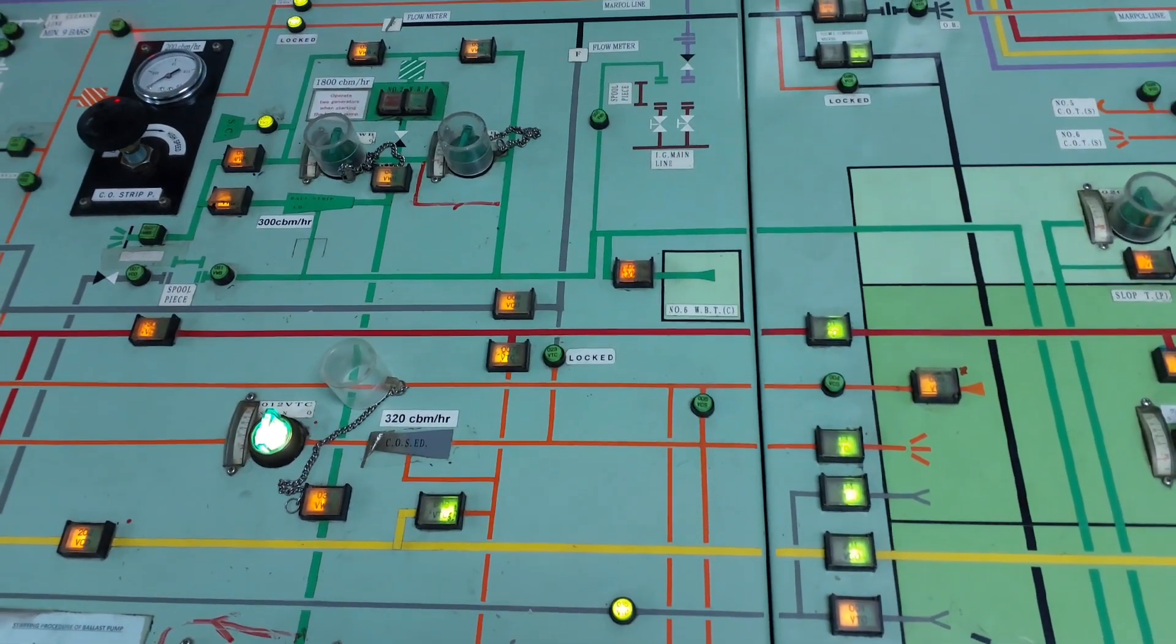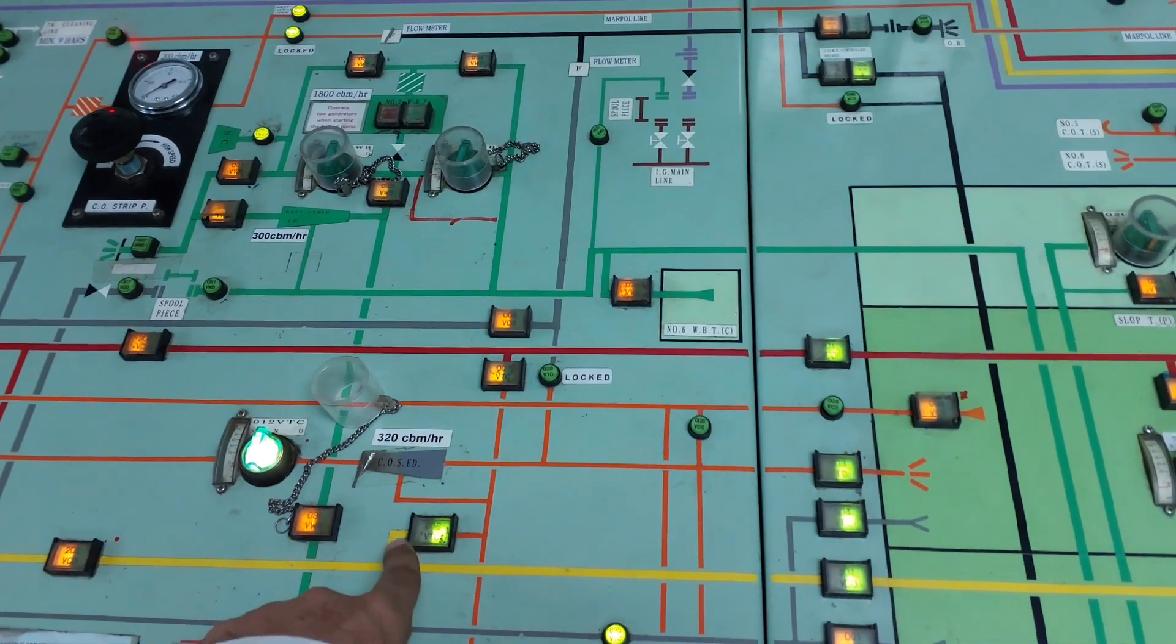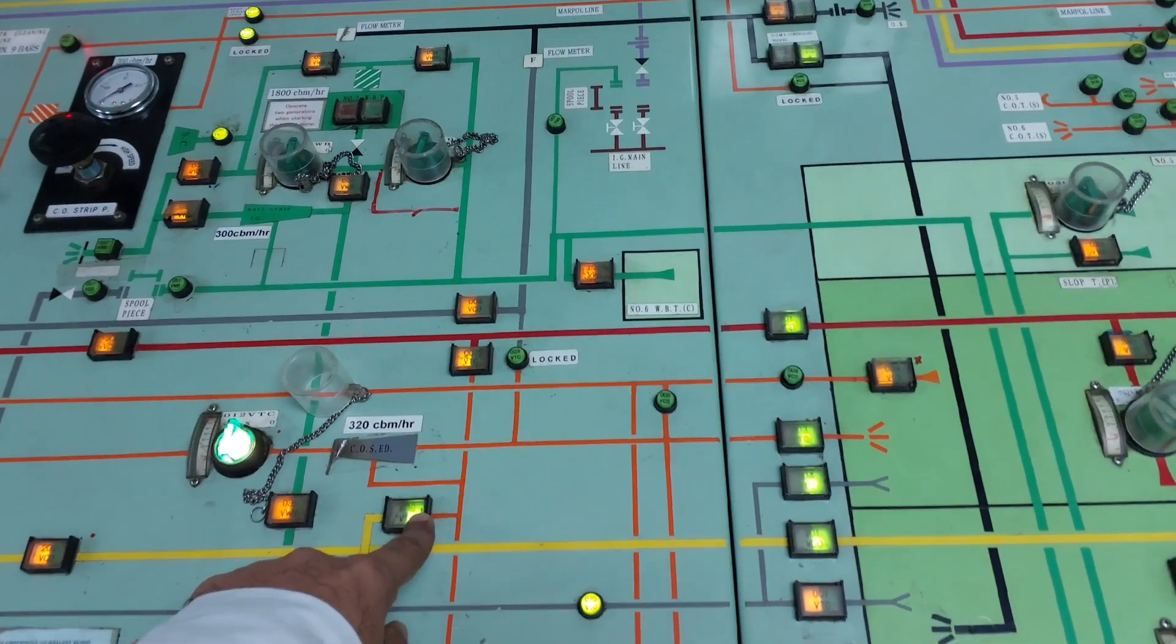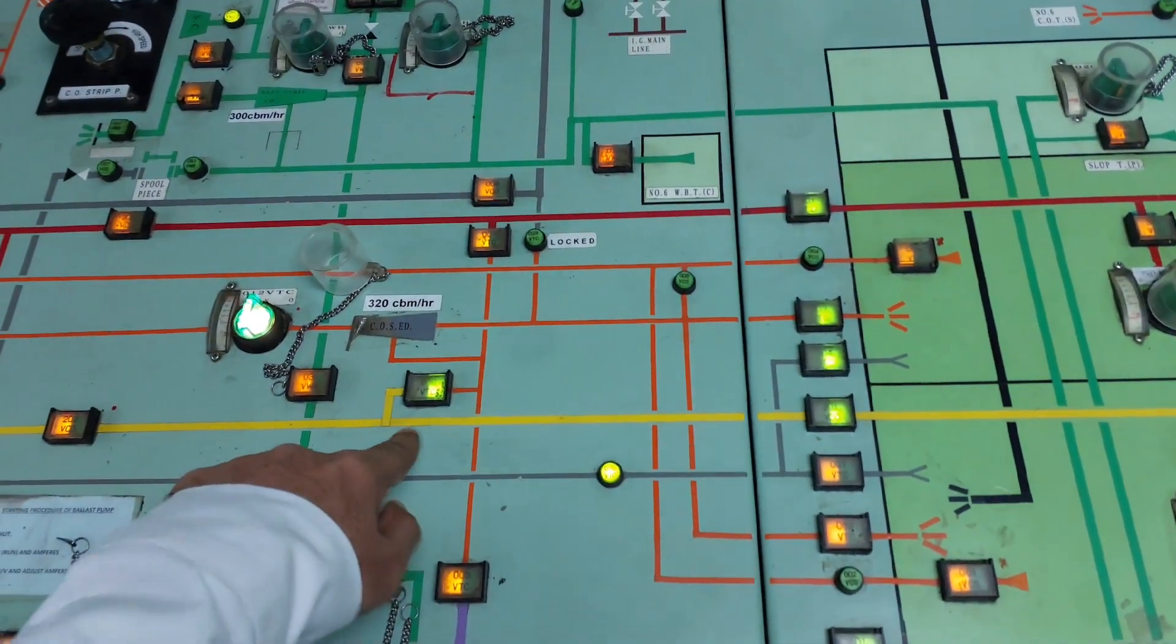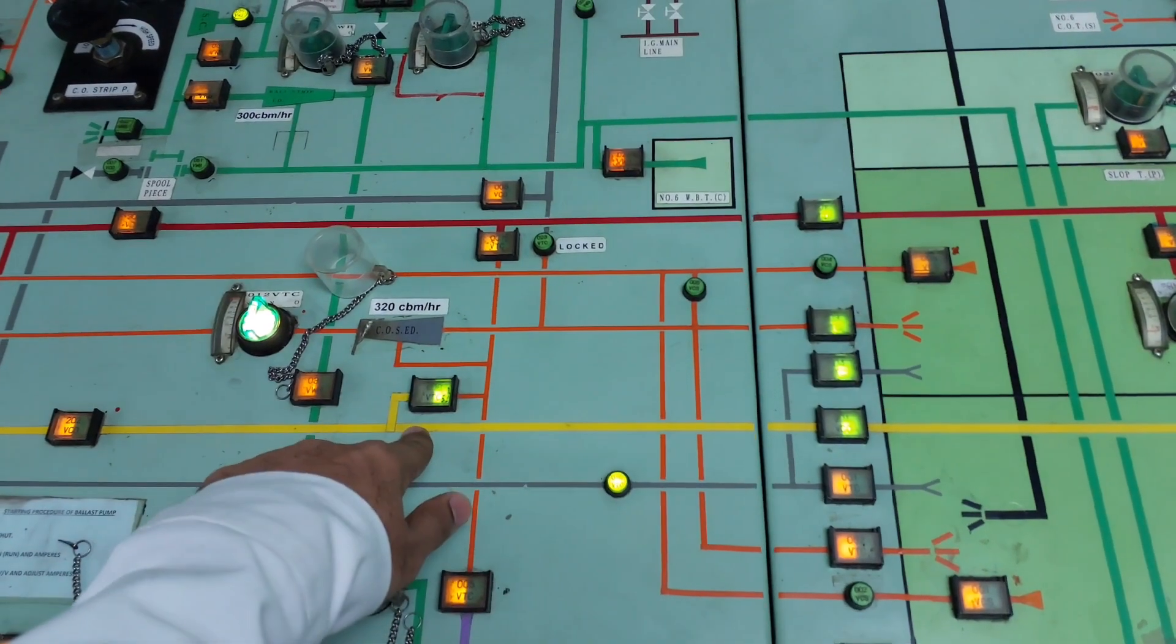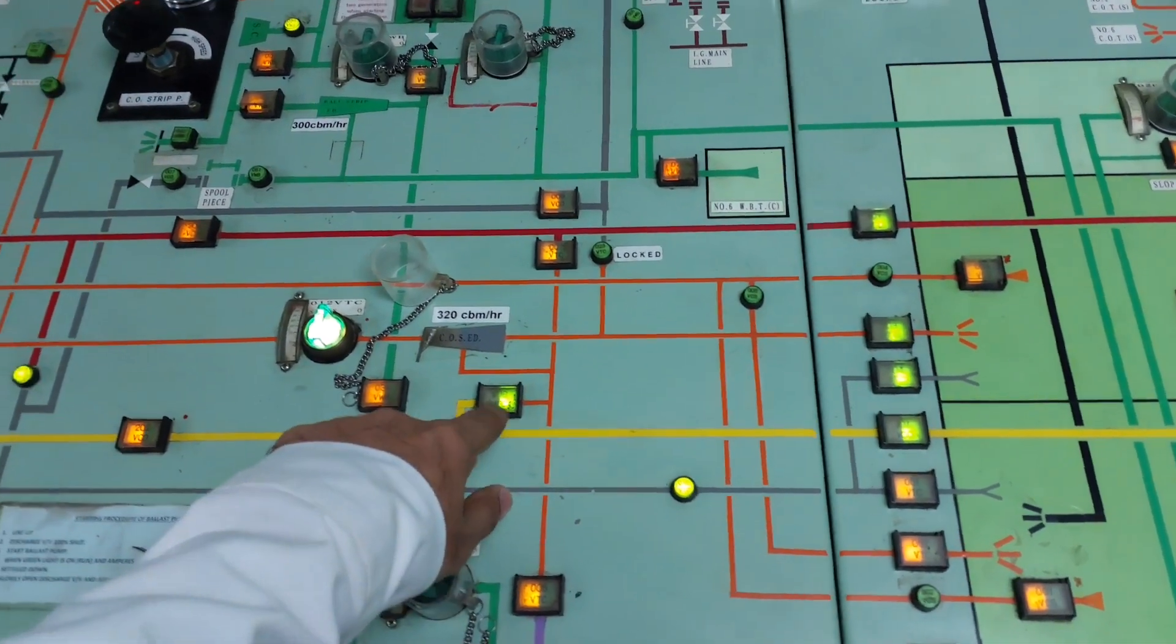So the lineup is complete for an eductor. When COP is running at 1300 rpm, the eductor will create vacuum here. So this eductor from vacuum side is connected with three lines: yellow line, blue line, and red line.